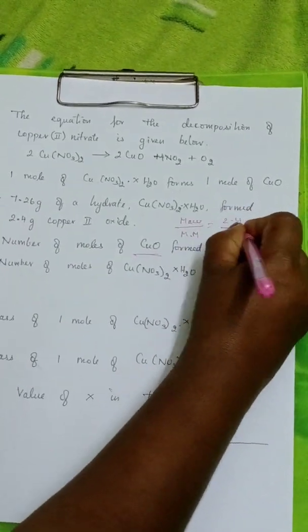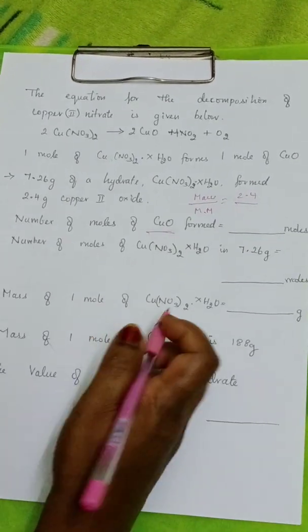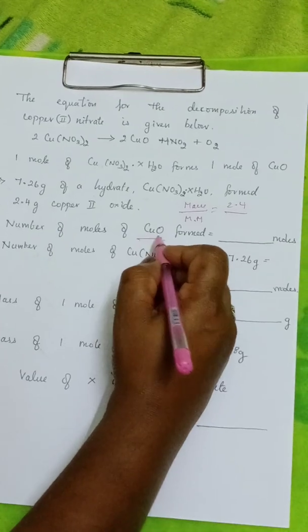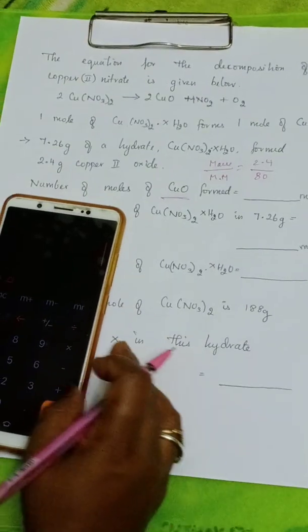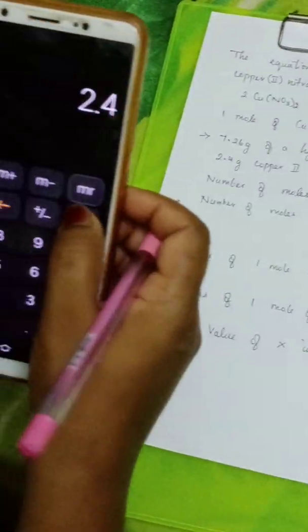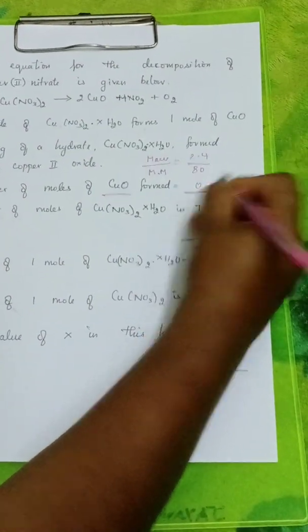Mass of copper oxide given here is 2.4. So, 2.4 by molar mass. What is the molar mass of copper oxide? Copper is 64, 64 plus 16 is 80. So, 2.4 by 80, 2.4 divided by 80 gives 0.03 moles.